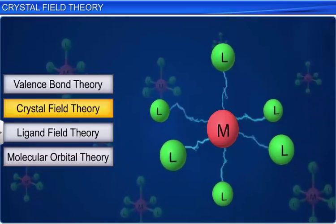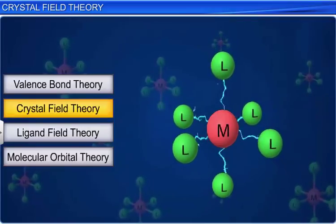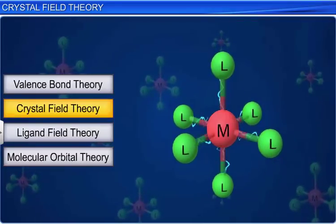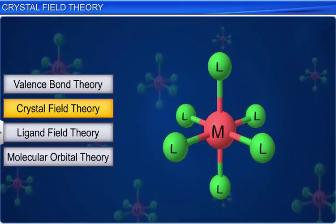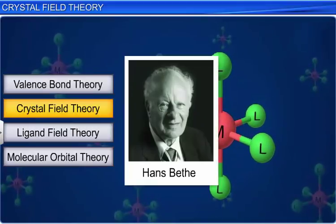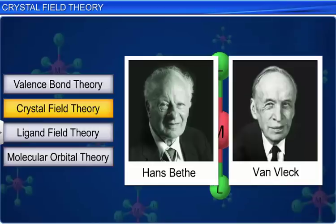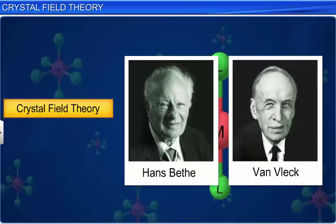The crystal field theory was proposed by Hans Bethe and Van Velenk. This theory gives a much more satisfactory explanation for the bonding and the properties of complexes than the valence bond theory.